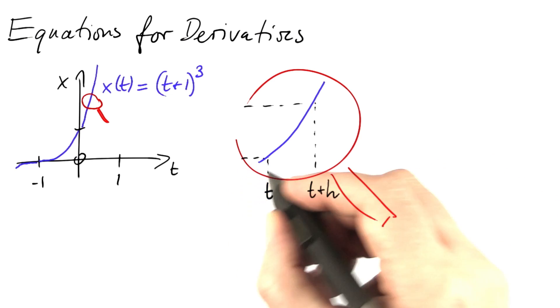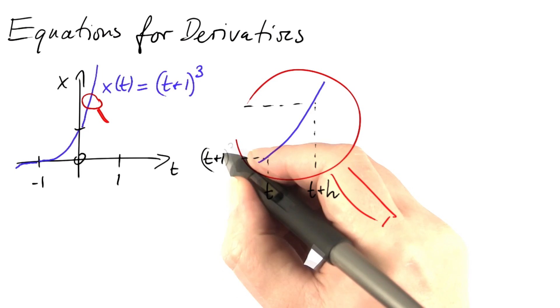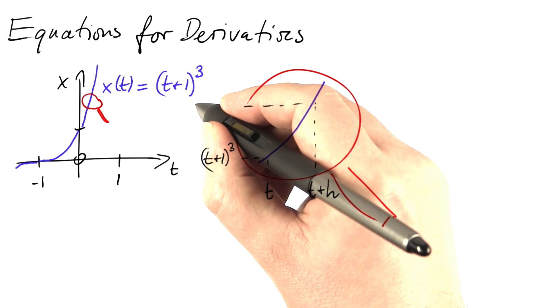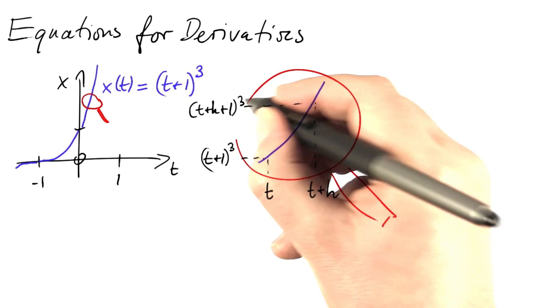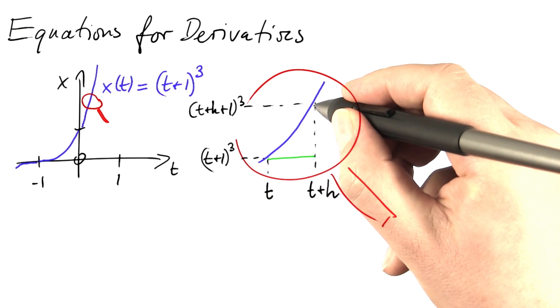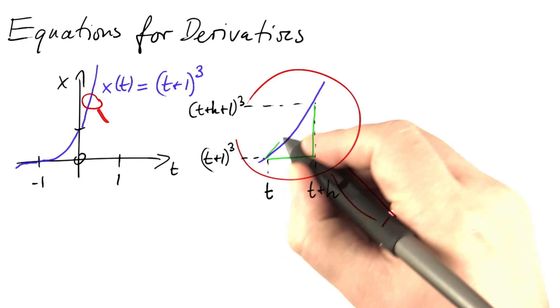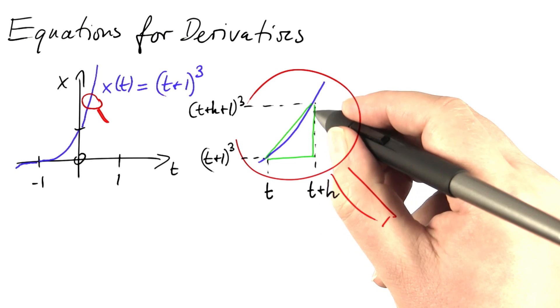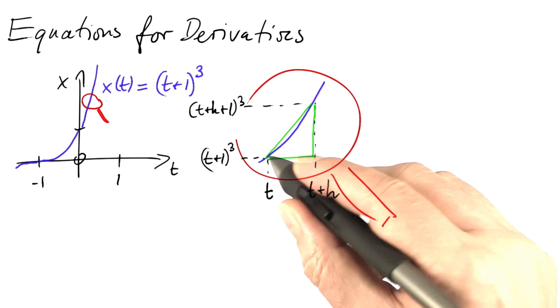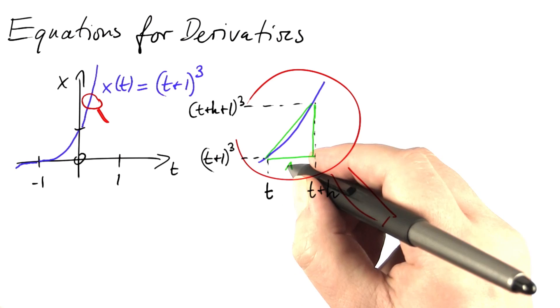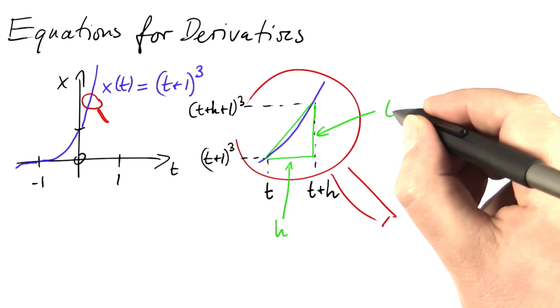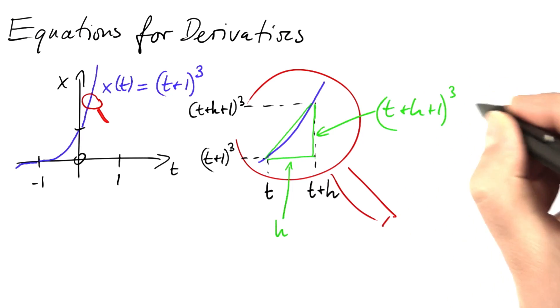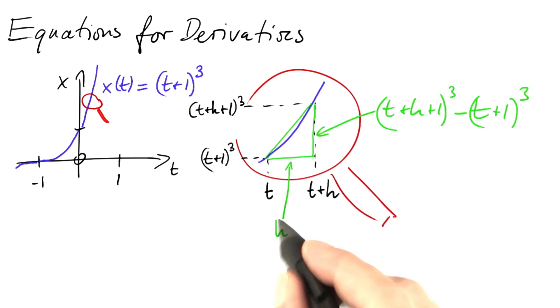Then the x value here is t plus 1 to the third power and the x value here is t plus h plus 1 to the third power. And the question now is what the rate of change is. What we are interested in is the ratio of the gain in x to the time step that we are making. This side obviously has a length of h and this side has a length of t plus h plus 1 to the third power minus t plus 1 to the third power.